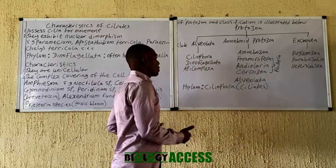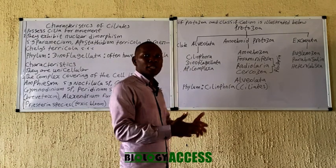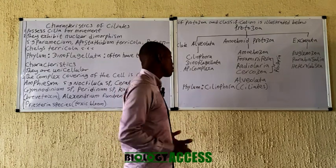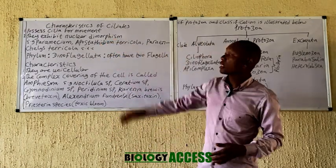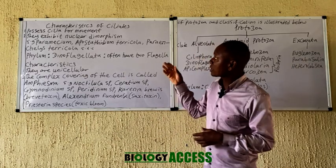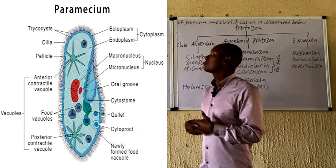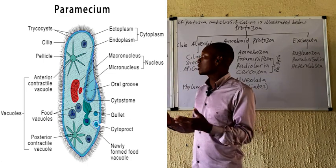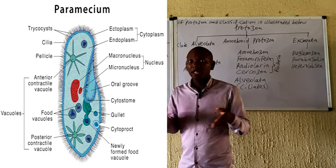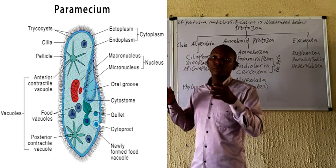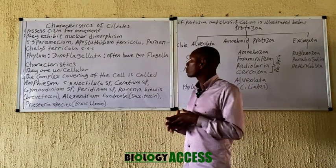The Ciliophora is actually a group of unicellular protists that are structurally complex — they are the most structurally complex protists, possessing cilia. Their characteristics include possession of cilia for movement, as seen in the diagram of Paramecium on the board. They also exhibit nuclear dimorphism — having two types of nuclei: the micronucleus and the macronucleus. The micronucleus is responsible for reproduction while the macronucleus is responsible for day-to-day activities.